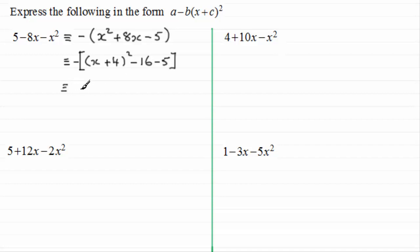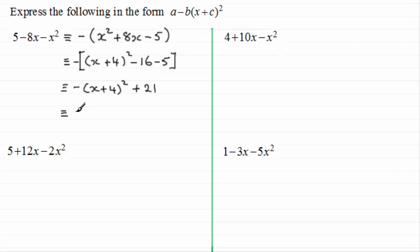What we do next is expand the bracket. We get minus all of (x plus 4) all squared, so that's minus (x plus 4) all squared. And minus 16 minus 5 is minus 21, and then you've got minus minus 21 which is plus 21. Switching this around to get it in the required format, this is going to be identical to 21 minus (x plus 4) all squared. So if we were asked to state the values of a, b and c: a would be 21, b would be 1 — because we've got this minus here — and c would be 4.